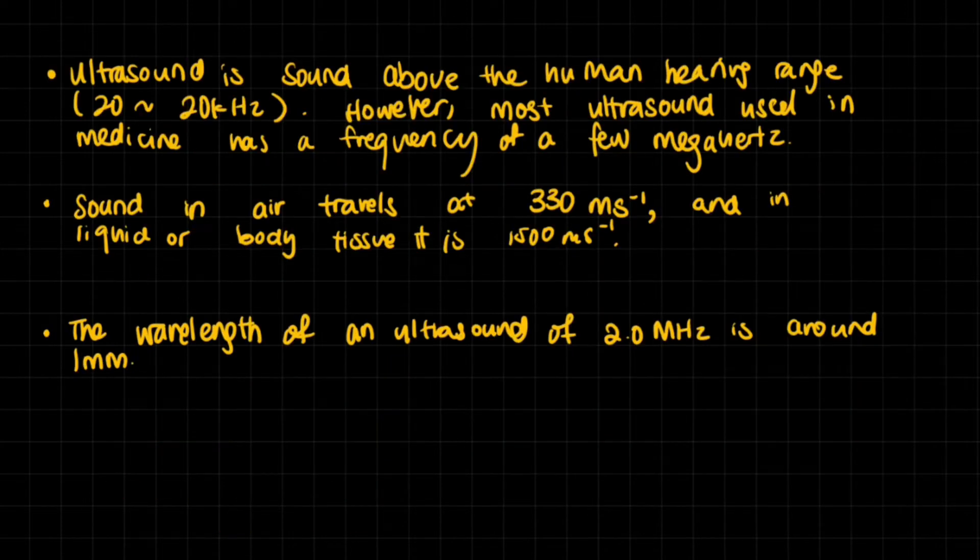A quick overview: ultrasound is sound above the human hearing range, which is 20 to 20 kilohertz. However, most ultrasounds used in medicine have a frequency of a few megahertz, way above our hearing range. Sound in air travels at around 330 meters per second, and in liquid or body tissue, which is mostly liquid, it is 1500 meters per second.